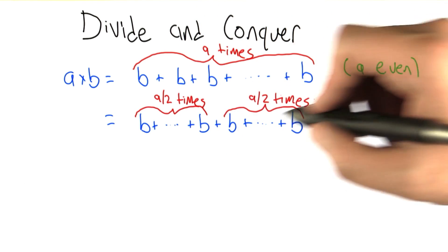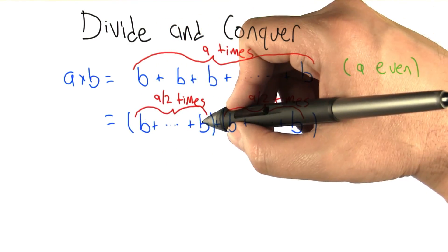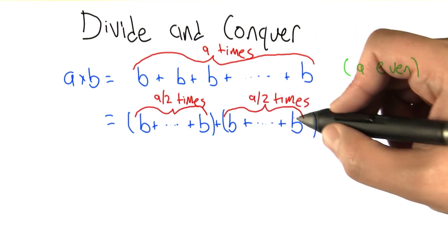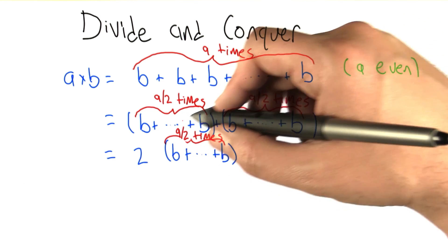We're considering the case where a is even here. We can regroup things as two sums: b added to itself a over 2 times, and then b added to itself a over 2 times again, and those two things added together. But it's silly to compute the same thing twice.